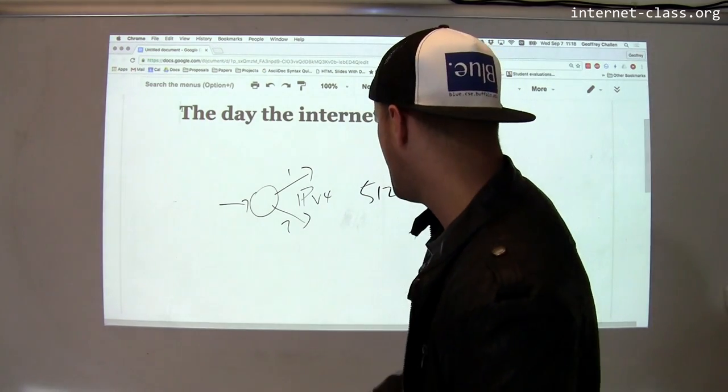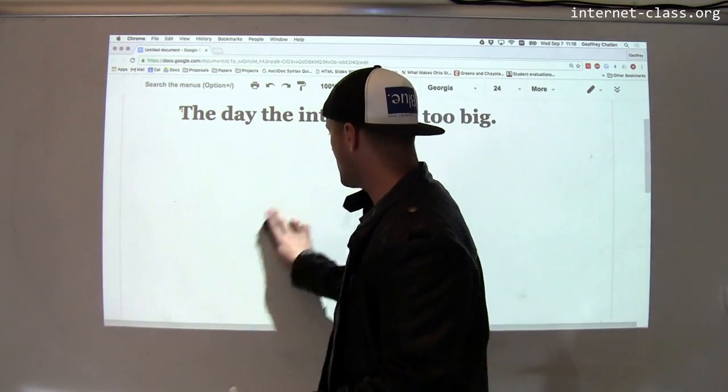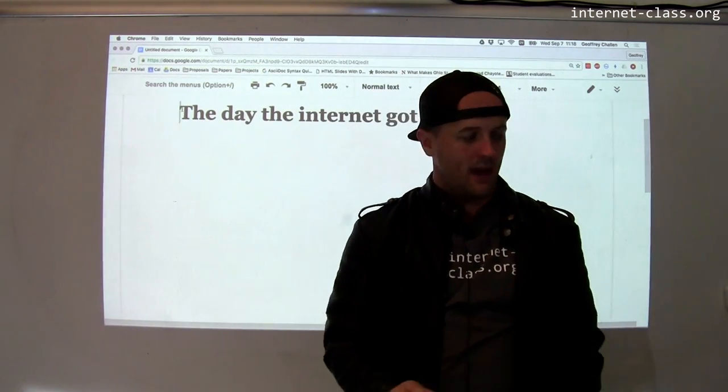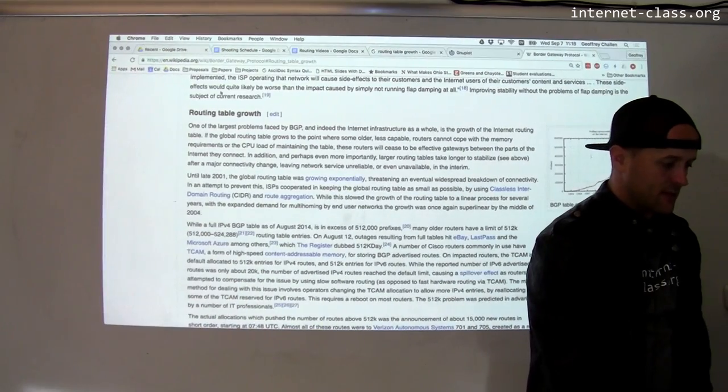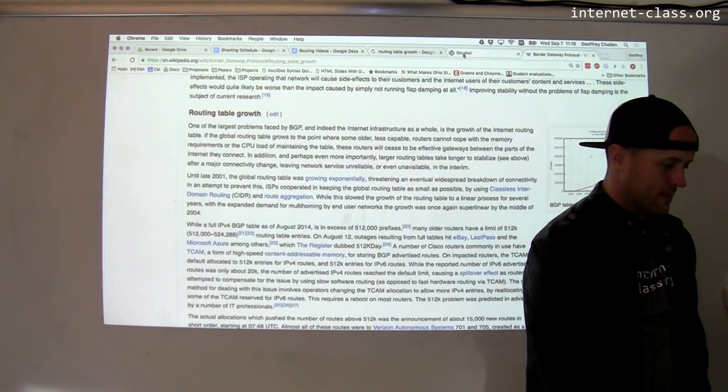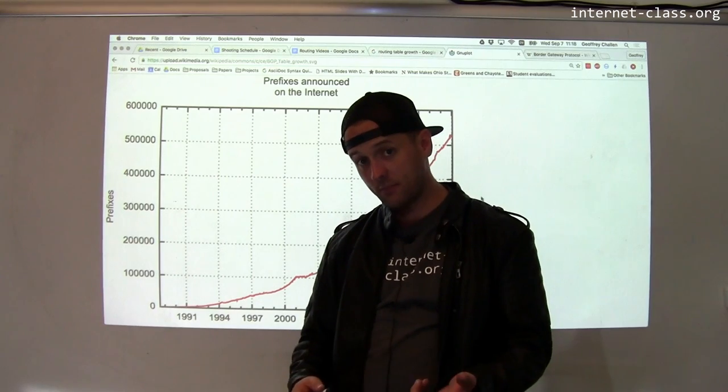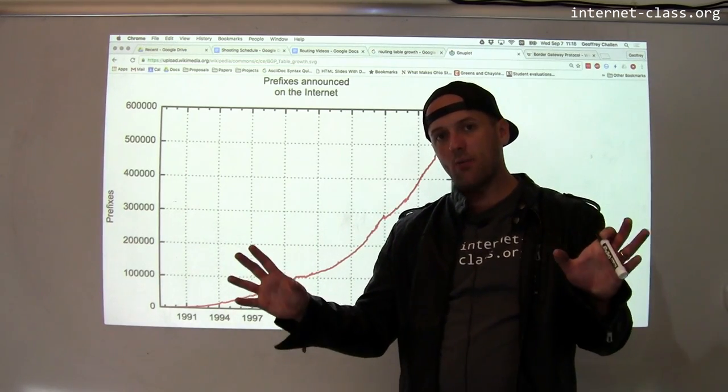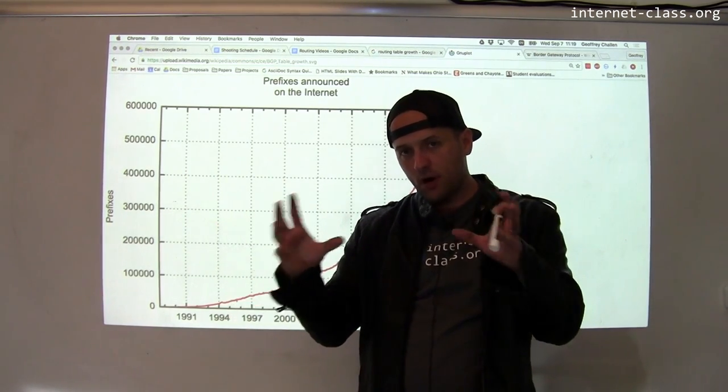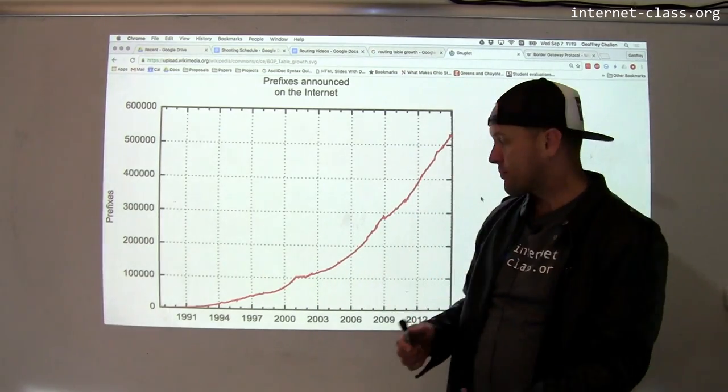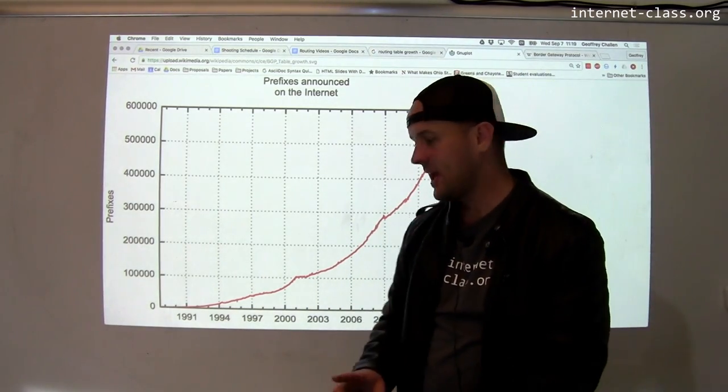So here's the problem. As the internet has been growing, and as we've been doing things to try to alleviate the exhaustion of the IPv4 address space, we've been dividing networks that were big into smaller networks, and that's produced more prefixes that routers have to handle.